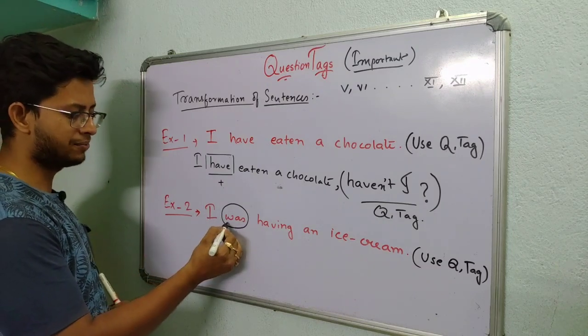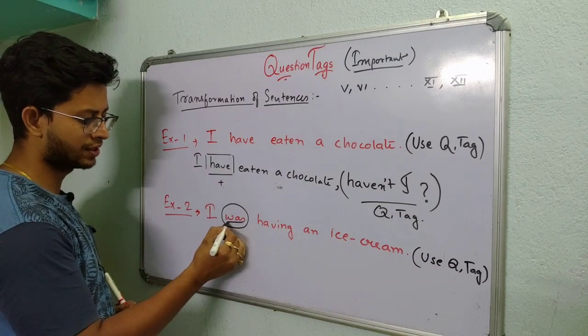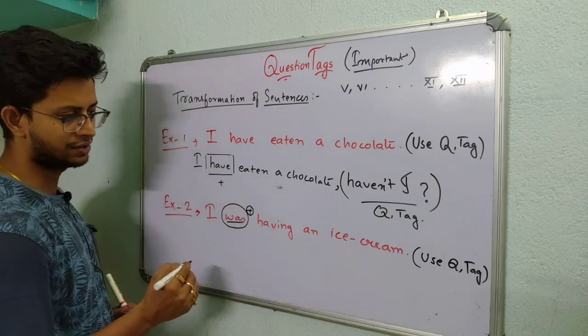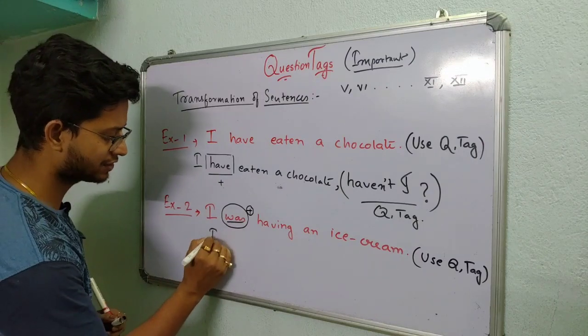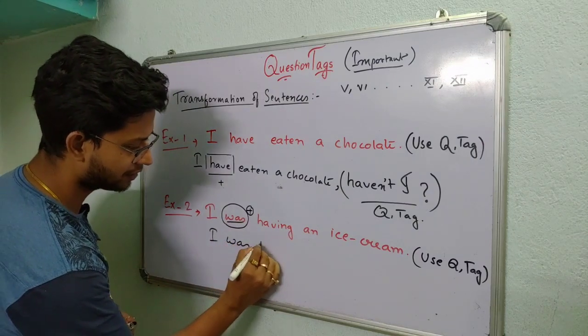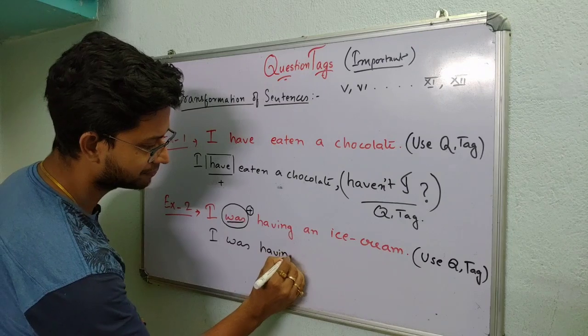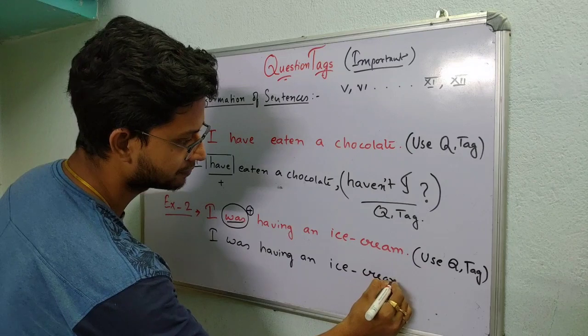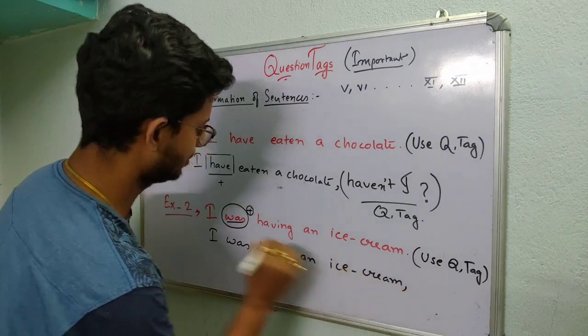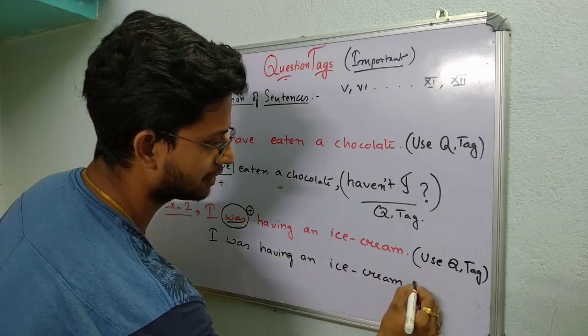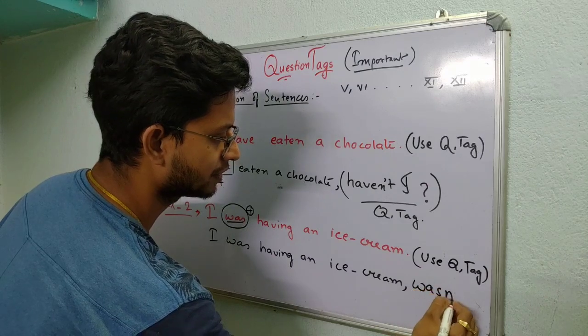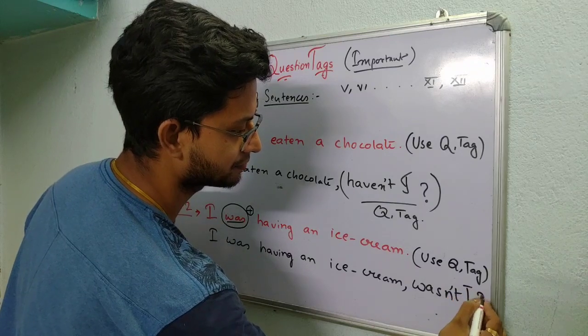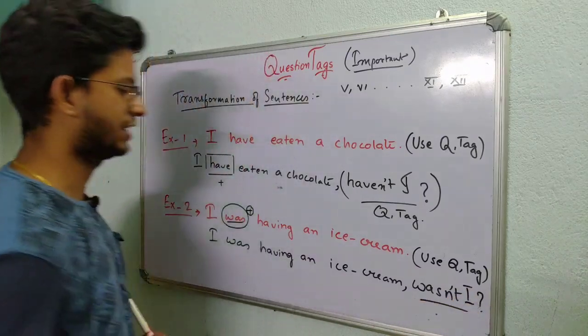So look, what is the helping verb here? Was. So is was in what form? Positive form. So how will we change it? First we'll take the full sentence. I was having an ice cream. Then give a comma. So what will be the negative of was? Wasn't. Or this I here, I will come again. Wasn't I. So this is your question tag.